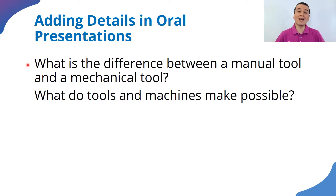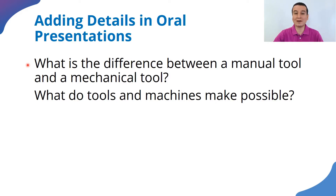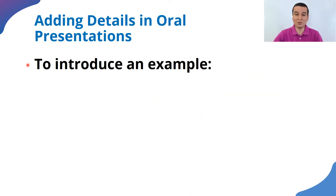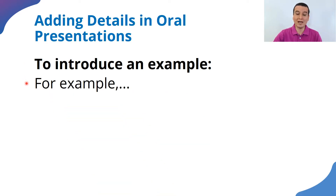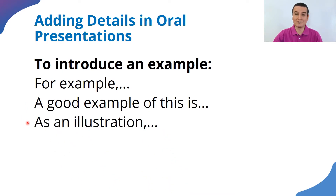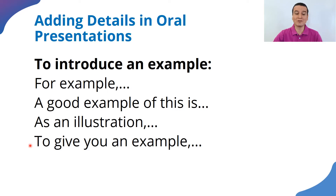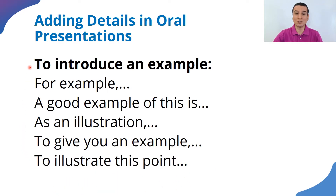When we add details in our presentation, we may need to introduce what kind of detail we are talking about. To add details or clarification using examples, here are some phrases we can use: 'for example,' 'a good example of this is,' 'as an illustration,' 'to give you an example,' or 'to illustrate this point.' Those are expressions to introduce examples.